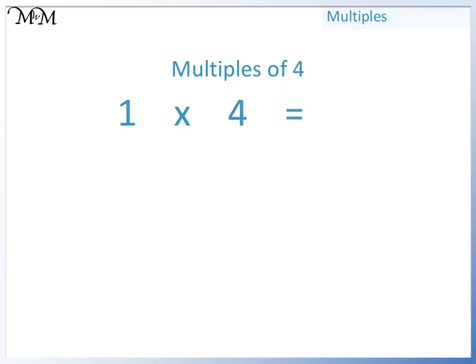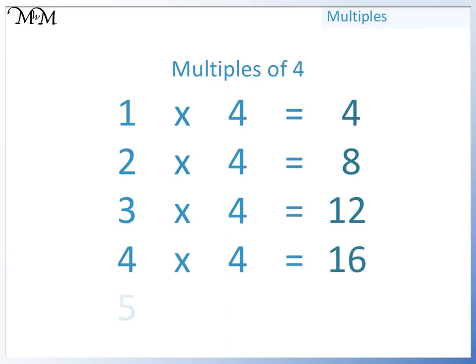1 times 4 equals 4. 2 times 4 equals 8. 3 times 4 equals 12. 4 times 4 equals 16. 5 times 4 equals 20.